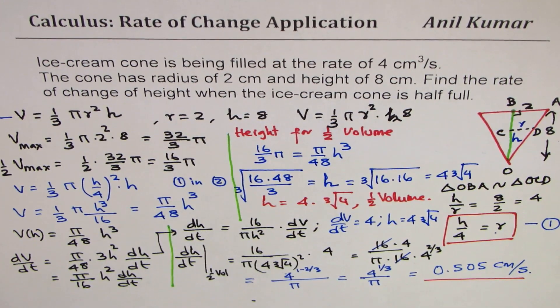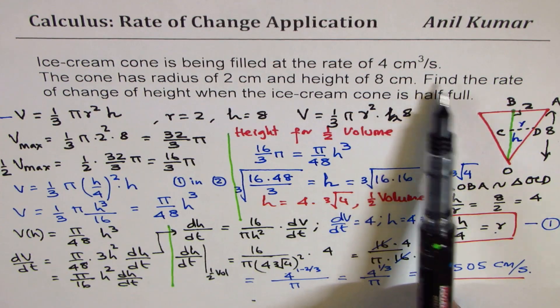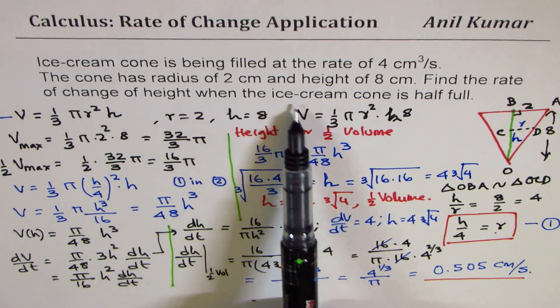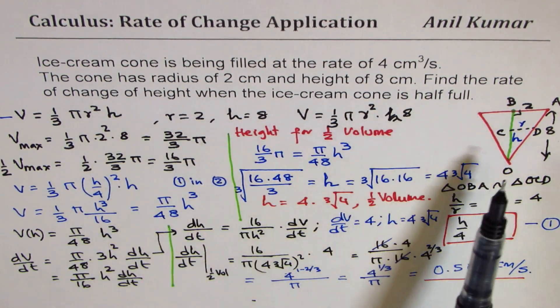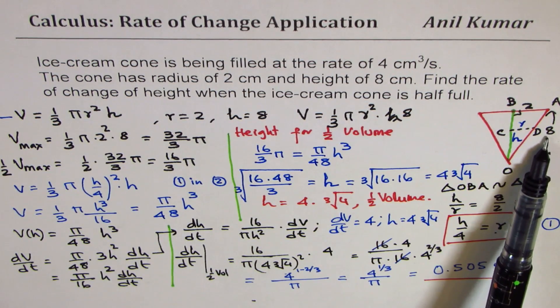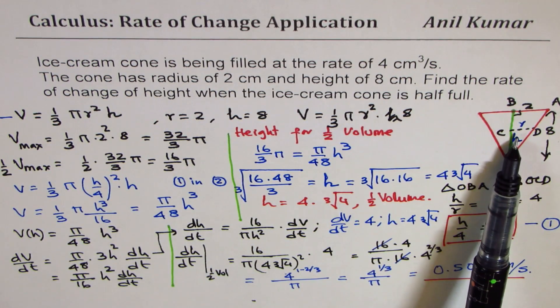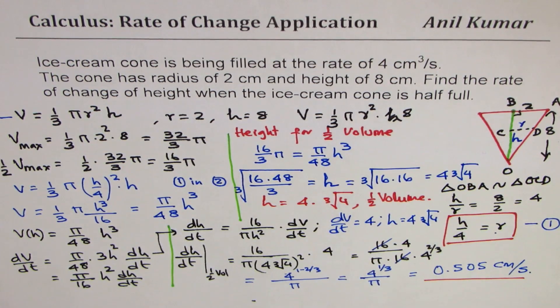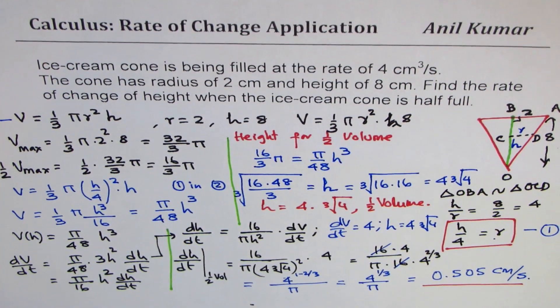So I hope that is clear to you. It's kind of interesting that when we say find the rate of change of height when ice cream cone is half full, don't go for height of 4. Half of height. Half of height is a cone, not a cylinder. So that makes sense. So keep that in mind. I hope you understand and appreciate this solution. Feel free to write your comments and share your views. If you like and subscribe my videos, that'd be great. Thank you and all the best.